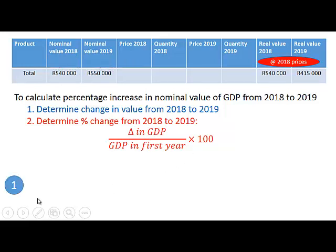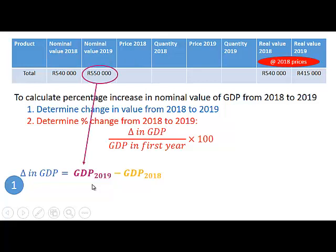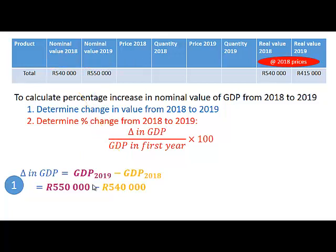Step one: we want to determine the change in value. The change in GDP is the GDP for 2019 minus the GDP for 2018 — so it's 550,000 minus 540,000, which gives us 10,000.